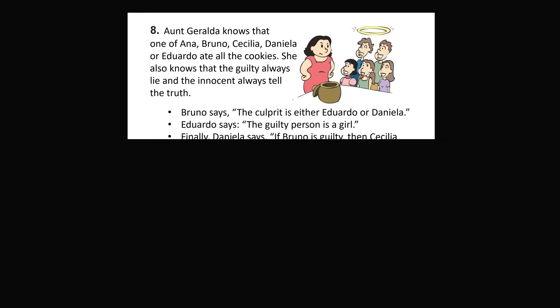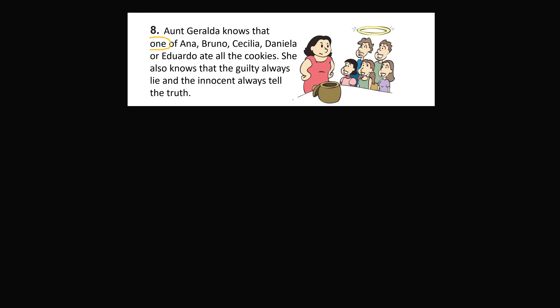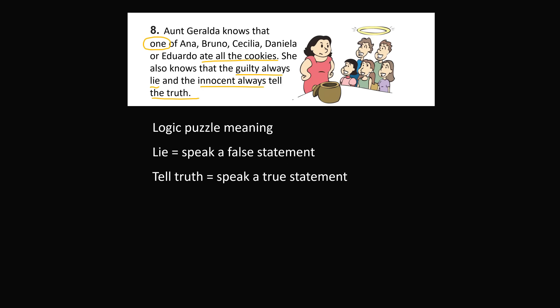Let's go through the problem step by step. The aunt knows that one of the children ate all of the cookies. She also knows that the guilty always lie and the innocent always tell the truth. Only one person is guilty of the crime, and only one person will be giving a false statement and lying. It's important to clarify something in a mathematical context or a logic puzzle setting: lying and telling the truth don't mean the same thing as in casual conversation. To say a lie means to speak a mathematically false statement, and to tell the truth means to speak a mathematically true statement. You are either lying or telling the truth — there is no half truth.